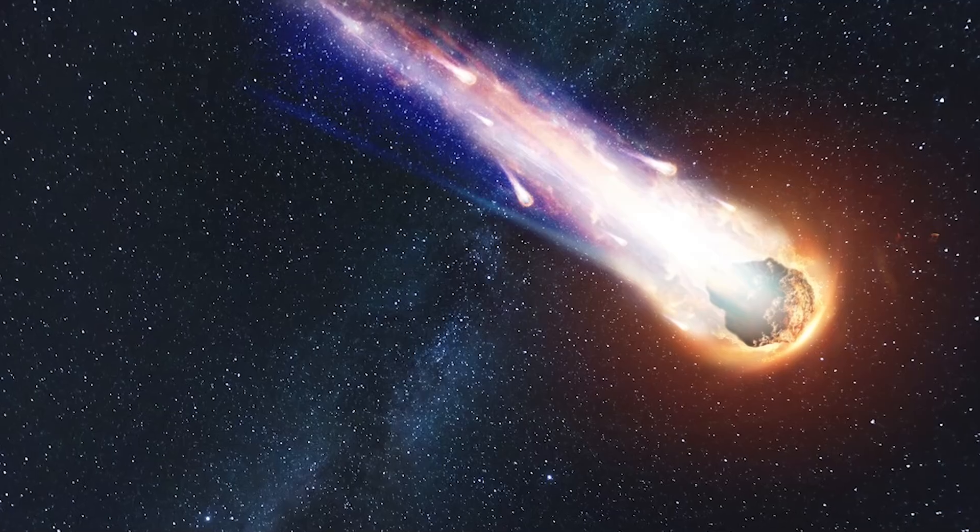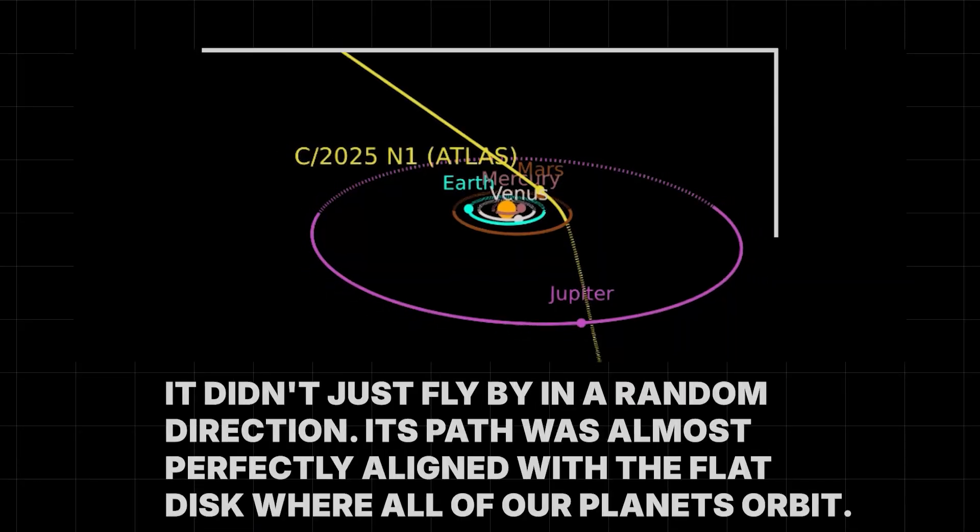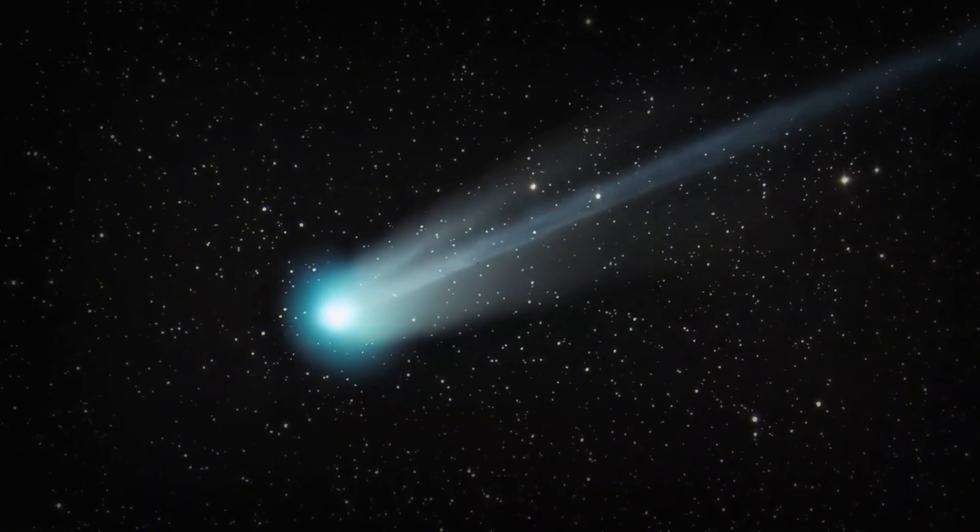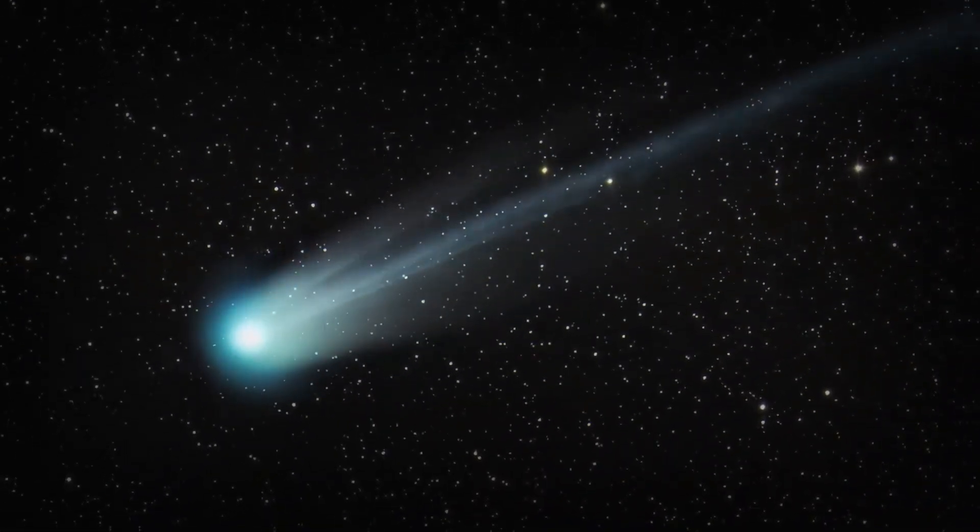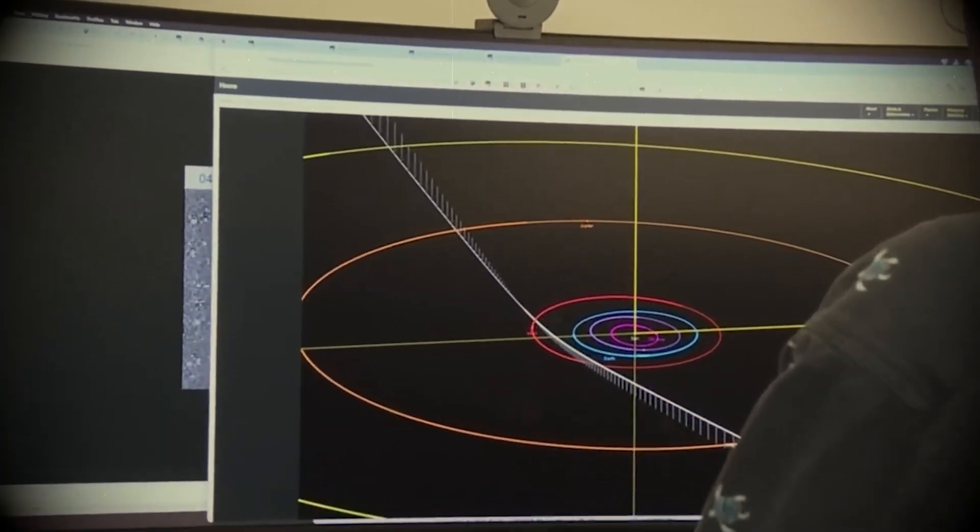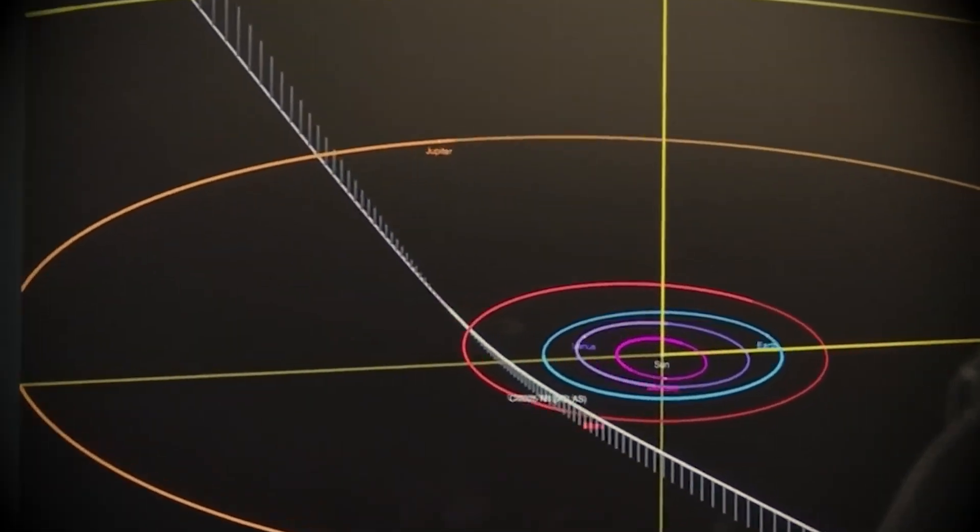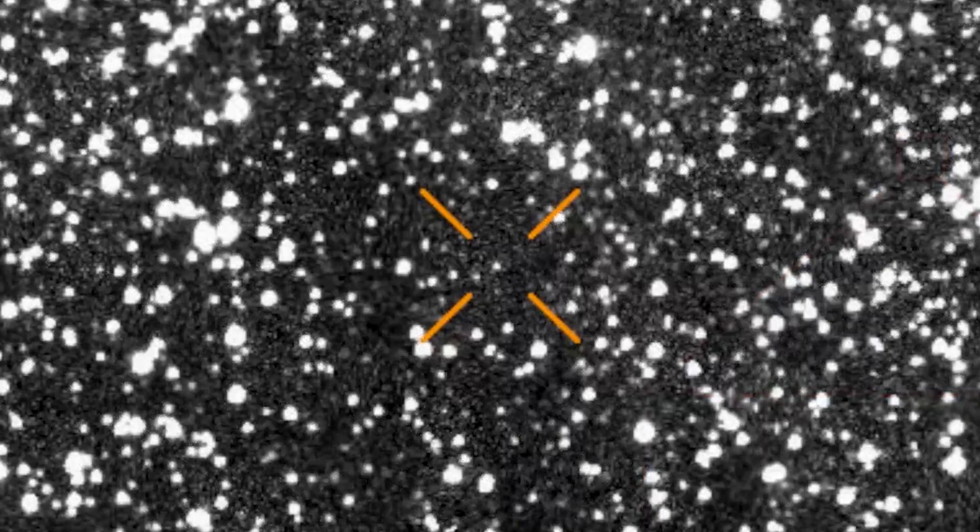But the improbability of the journey gets even stranger. One of the most shocking things is its path. It didn't just fly by in a random direction. Its path was almost perfectly aligned with the flat disk where all of our planets orbit. The odds of this happening by pure chance are less than 1%. It's like that grain of sand not only hitting the right pebble, but also landing perfectly flat. This has led some to ask a very controversial question.